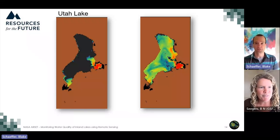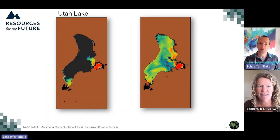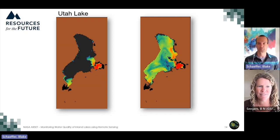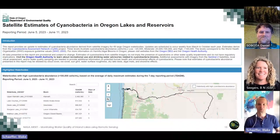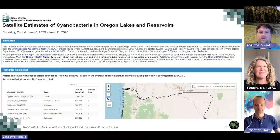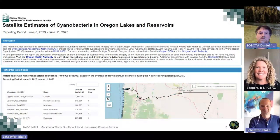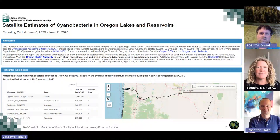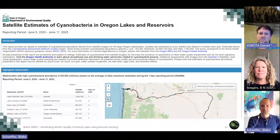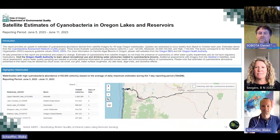Some other states have found the Cyanobacteria Assessment Network helpful for their cyanohab monitoring. We had a conversation with Daniel Sobota, Senior Water Quality Analyst at the Oregon Department of Environmental Quality. Oregon has been using satellite data from the project for the past four years to detect potentially harmful cyanobacteria blooms in large lakes and reservoirs across the state. They use this information to help guide field sampling by staff and inform the Oregon Health Authority about potential blooms. They've developed a web application to distribute the satellite data to staff and lake managers across the state on a weekly basis.